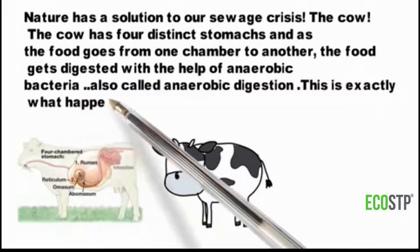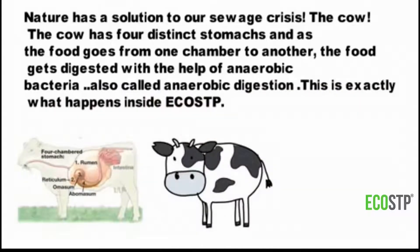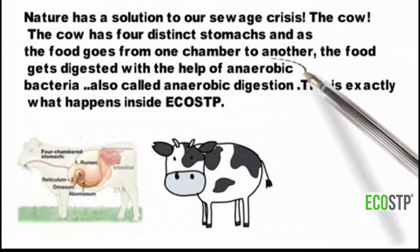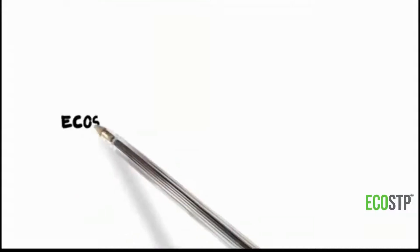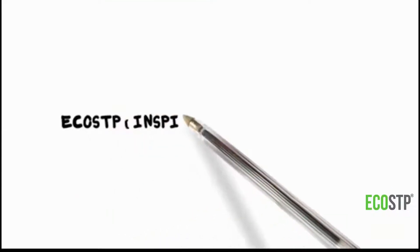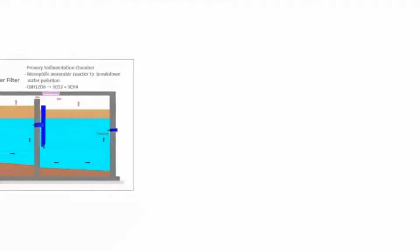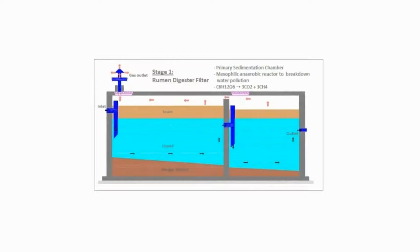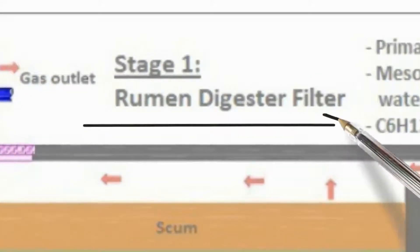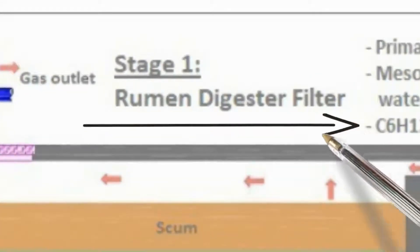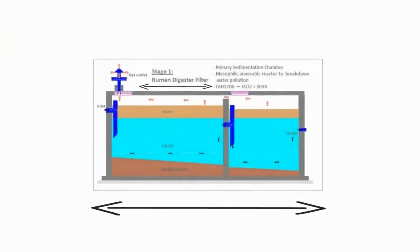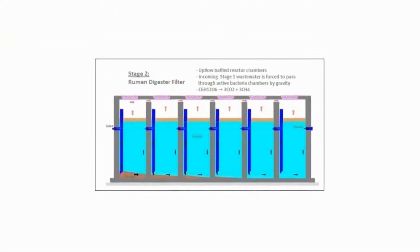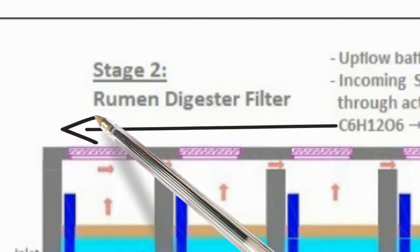This is exactly what happens inside EcoSTP. EcoSTP is the solution to our sewage problem. First, the sewage enters Stage 1 — the rumen digester filter — which is the primary treatment where all solids settle down. Next, by gravity, the water moves to the second stage rumen digester filter.